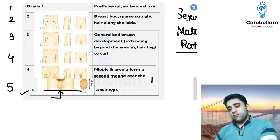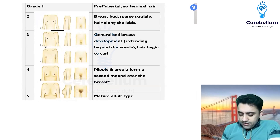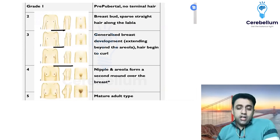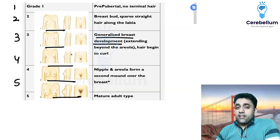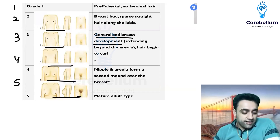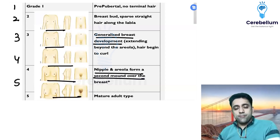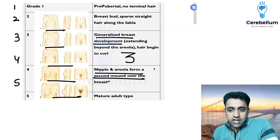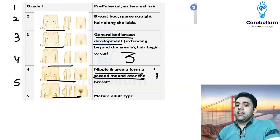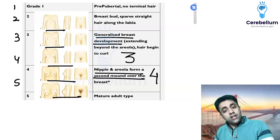For SMR staging in girls, we again have five stages using the Tanner chart. In which stage of SMR is there generalized breast development? And in which stage of SMR are the nipple and areola separately seen? In stage three SMR there is generalized breast development, whereas in stage four SMR the nipple and areola are separately visible. These two are very important questions for females.